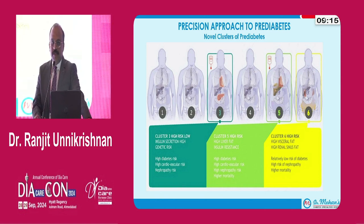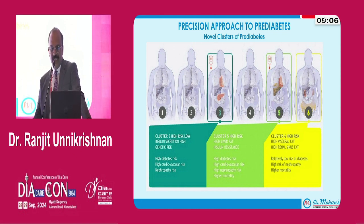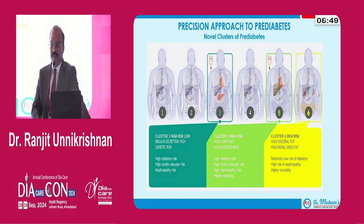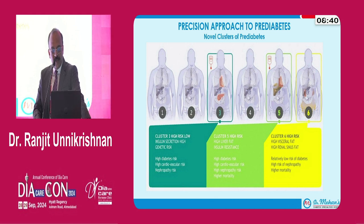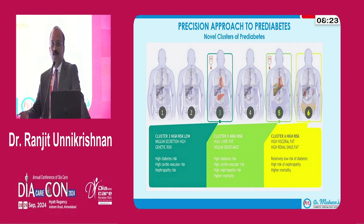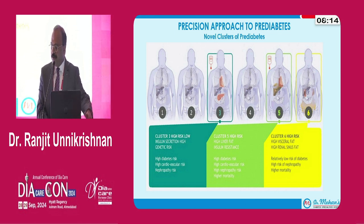Going beyond that, a study from central Europe by Trung and Wagner et al. further subdivided individuals at high risk of diabetes using various tests like MRI, body fat, C-peptide, and glycemic levels, identifying six clusters of pre-diabetes. Clusters 3, 5, and 6 were at high risk of progressing to type 2 diabetes. Cluster 3 had high genetic risk and low insulin secretion; cluster 5 had high liver fat and increased insulin resistance — both had the highest risk. Cluster 6, with high visceral fat, had a higher risk of kidney disease and mortality.